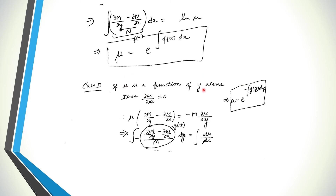Similarly, if mu is a function of y alone, then the partial derivative of mu with respect to x is 0. Substituting that into the main equation and separating terms, the condition is that the resulting expression must be a function of y alone. Integrating both sides, mu equals e to the power of the integral of minus g(y) dy, where g(y) is (∂M/∂y − ∂N/∂x) divided by M.